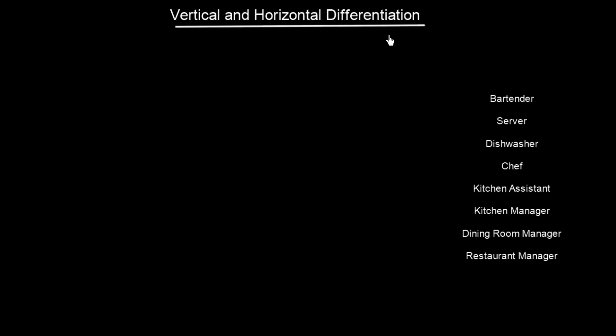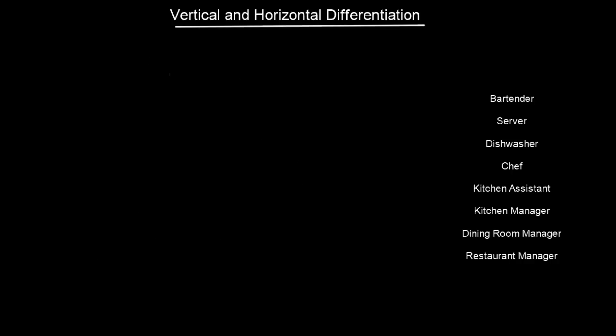But first, in order to do that, we are going to design a sort of restaurant. I have written down the roles of employees that we are going to have in a restaurant, and we should order them into this nice pyramid — this authority pyramid.